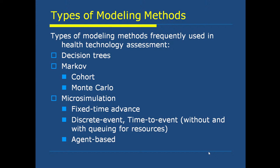All types of modeling methods can be divided into different subcategories. Types of modeling methods frequently used in health technology assessment include three types: decision trees, Markov models, and microsimulation models. Sub-categories for Markov models include cohort and Monte Carlo methods. Microsimulation is divided into fixed time at once, discrete event, time to event without and with competing for resources, and agent-based modeling methods.